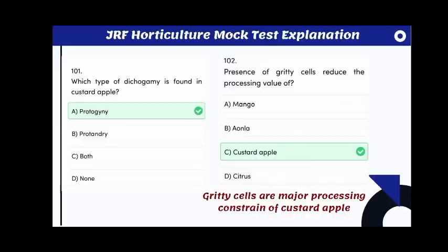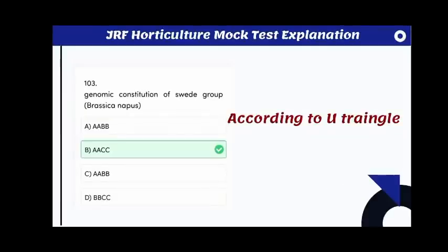Which type of dichogamy is found in custard apple? The answer is protogyny. Presence of gritty cells reduces the processing value of custard apple; gritty cells are a major processing constraint and appear in sandy-textured fruit.